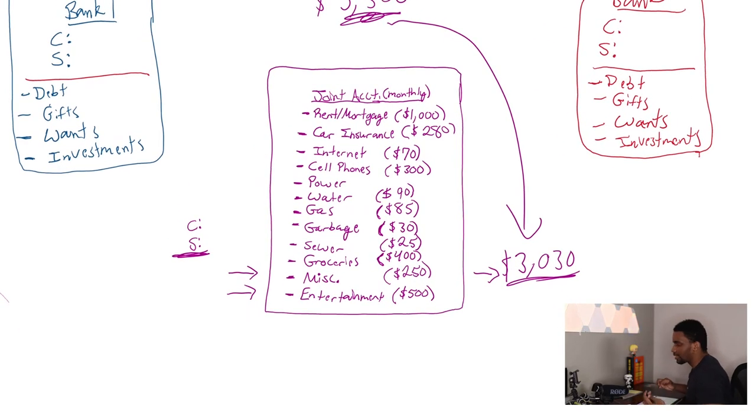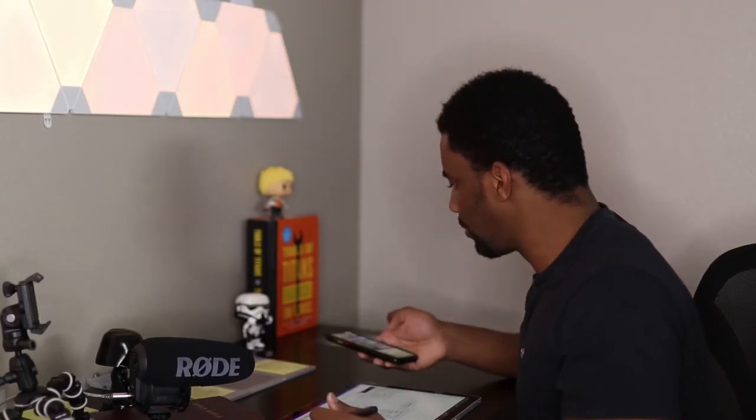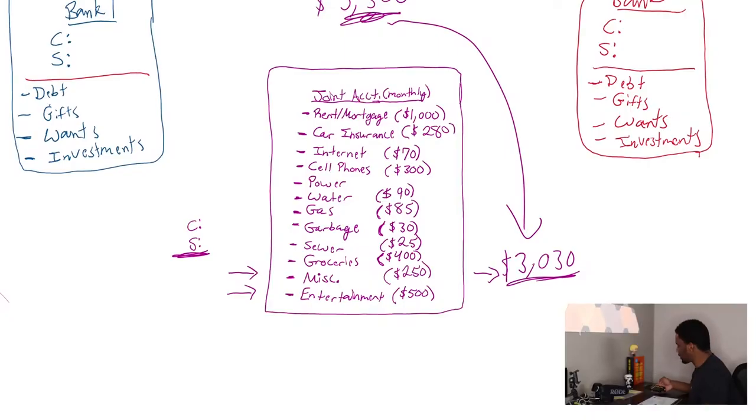So if we want to turn this into an emergency fund, which is three to six months worth of expenses, which would mean we would literally have to go ahead and multiply this $3,030 by, we'll multiply it by six because you don't want to, you never know what's going to happen. Right. So we're going to multiply this $3,030 by six. So that's $18,180. I should have known that.